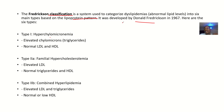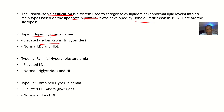Here are the six types. Type 1 is hyperchylomicronemia. From the name, you know that there are elevated levels of chylomicrons, but you're having normal levels of low-density lipoproteins and high-density lipoproteins.